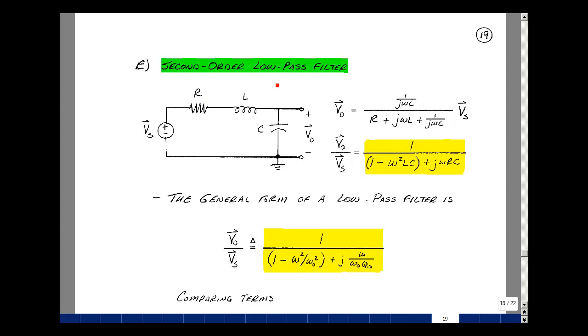Earlier in chapter six, we made a low pass filter with just an R and a C. You can also make a low pass filter by adding an inductor. This is actually going to increase the filtering as we go above the corner frequency. It's called second order because we have two reactive components.